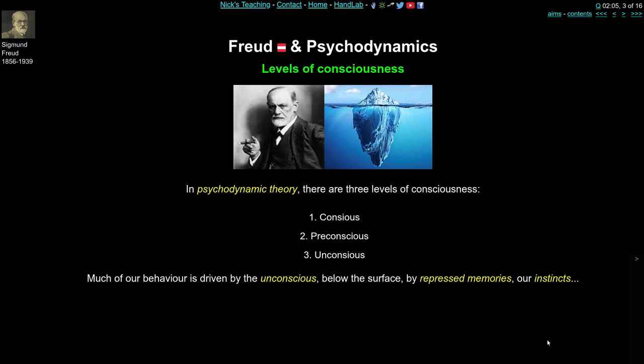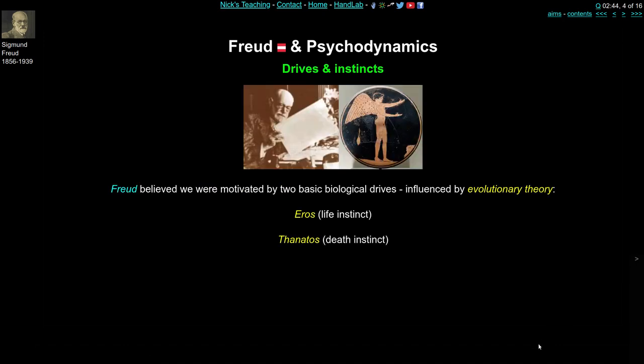In Freud's psychodynamic theory there are three levels of consciousness: the conscious, the pre-conscious, and the unconscious. Much like the iceberg analogy, the idea is that an awful lot of our mental life and processes are actually below the surface — unconscious, driven by instincts, repressed memories, and biological drives we're not really aware of. Two drives in particular, drawing from evolutionary theory, are eros, a life instinct, and thanatos, a death instinct, channelling ideas about the survival and the struggle for life.